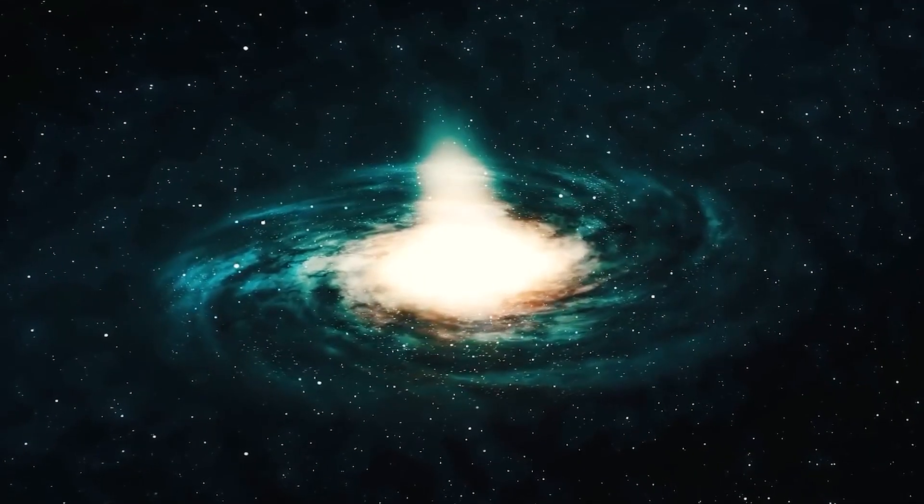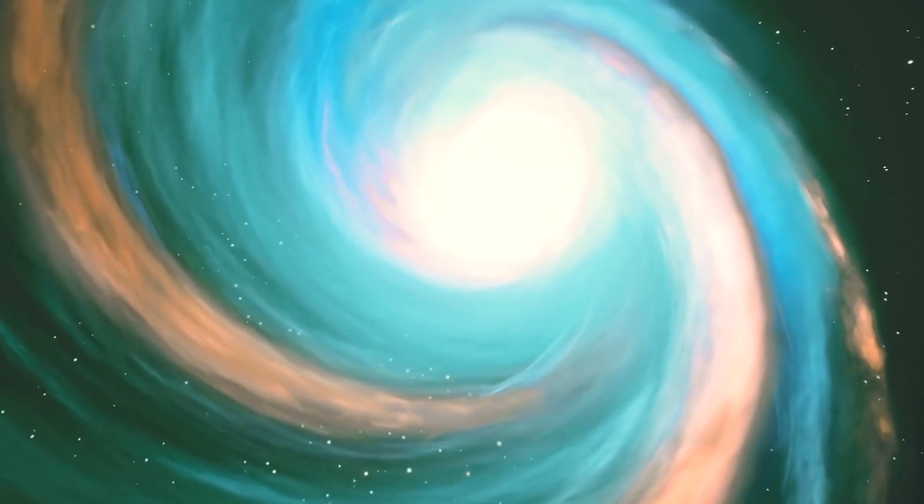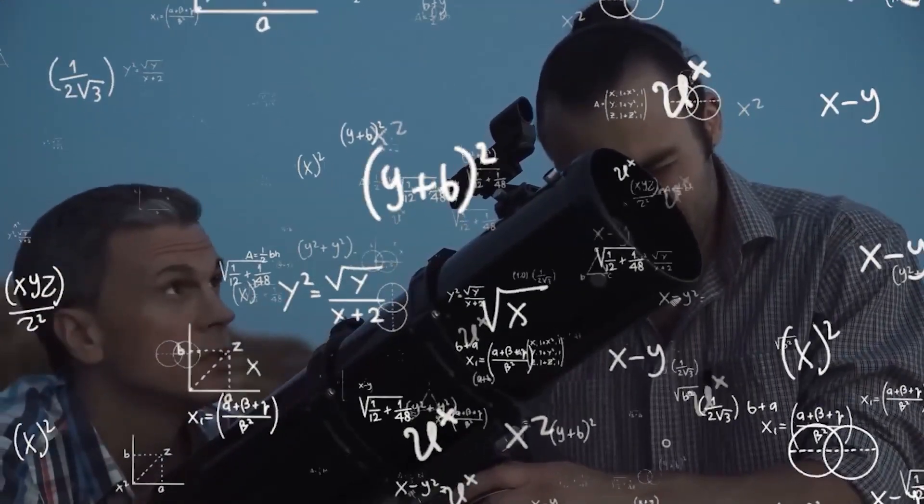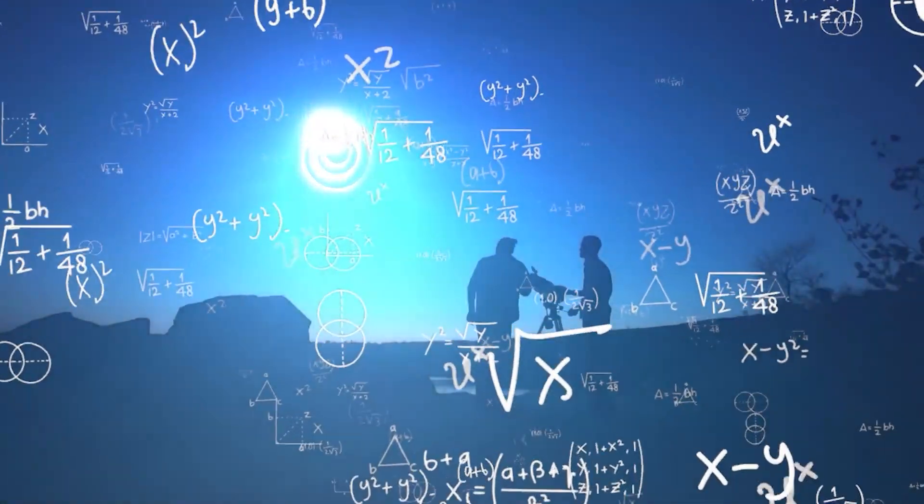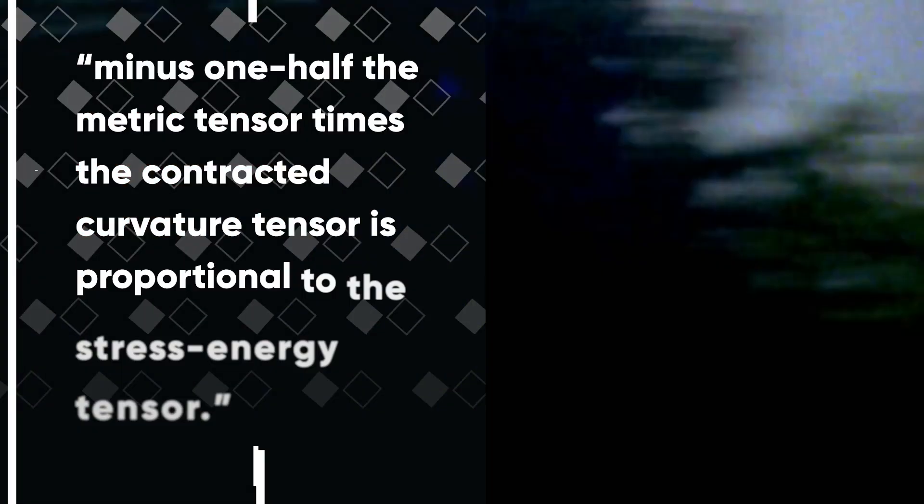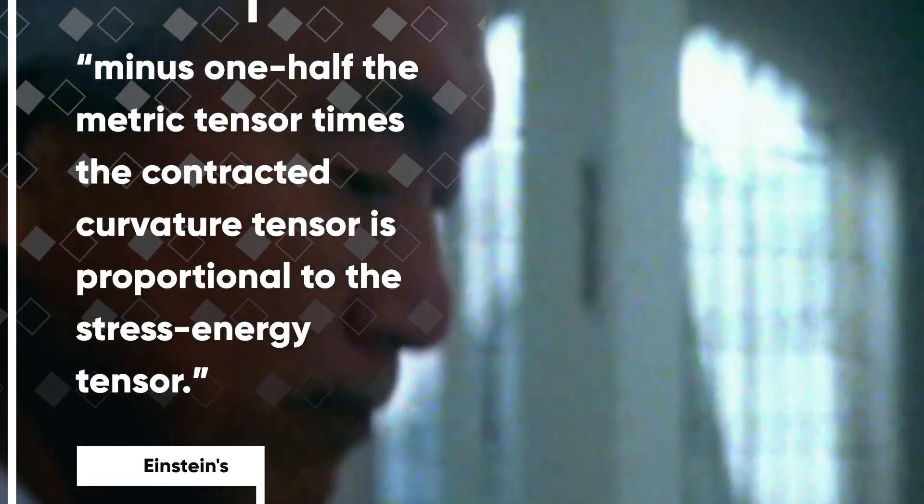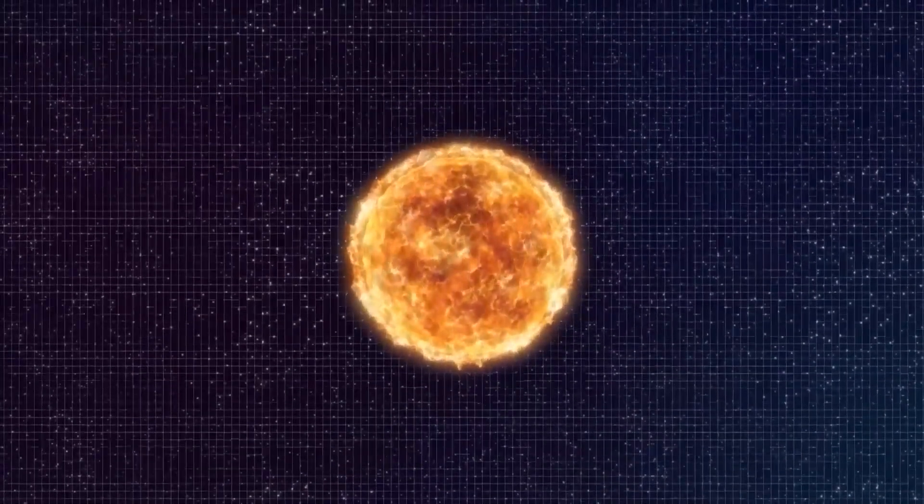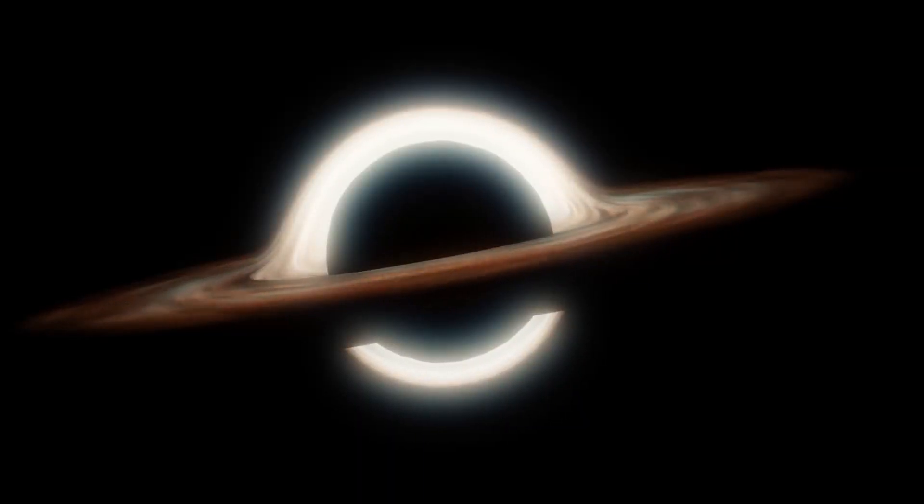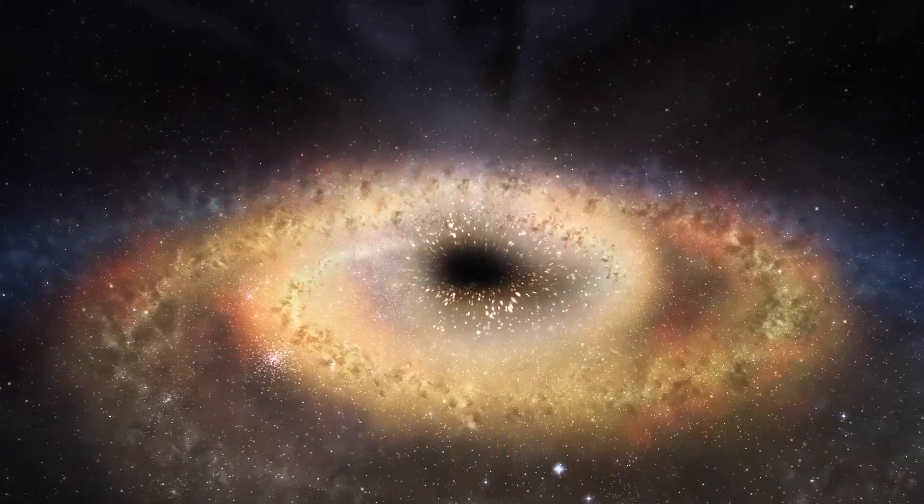Einstein hoped that general relativity would form the framework for a new understanding of nature. Instead, at the heart of its description of a black hole, theorists found a problem with Einstein's mathematics, something so disturbing his theory breaks down completely. Einstein's equations of general relativity simply say the following: The Ricci curvature tensor minus one-half the metric tensor times the contracted curvature tensor is proportional to the stress-energy tensor. All this says that if we start a star, a black hole, or even a universe, that determines the curvature surrounding that concentration of matter and energy. But inside these equations, there's a monster.